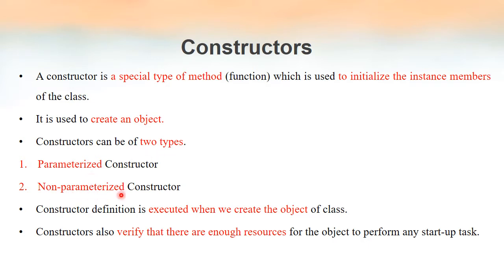There are two types of constructors: parameterized and non-parameterized. As the name indicates, a parameterized constructor is the constructor that accepts parameters, and non-parameterized means these constructors will not accept parameters. The lines of code that we write inside a constructor get executed only when we create an object, meaning constructors are used only for creating objects. There is no other duty for the constructor.